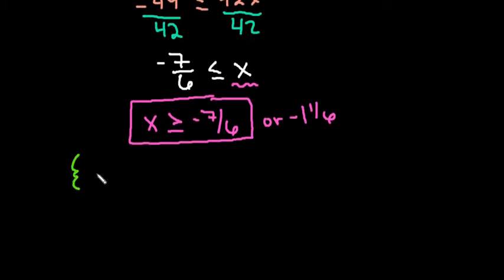You may also be asked to write this in set notation, where you write it as the set of numbers of x such that, and this line right here is read as 'such that,' x is greater than or equal to negative 7 sixths.